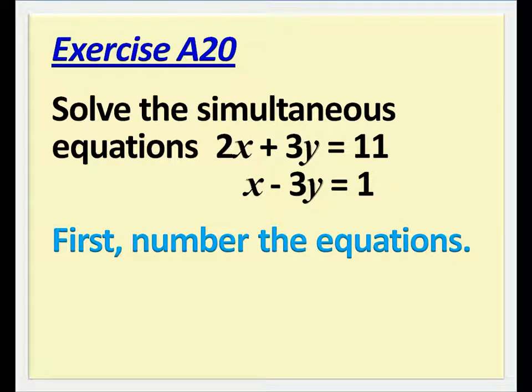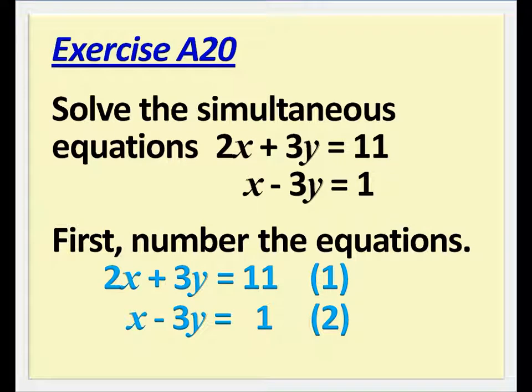First, number the equations. 2x plus 3y equals 11 as equation 1, and x minus 3y equals 1 as equation 2.